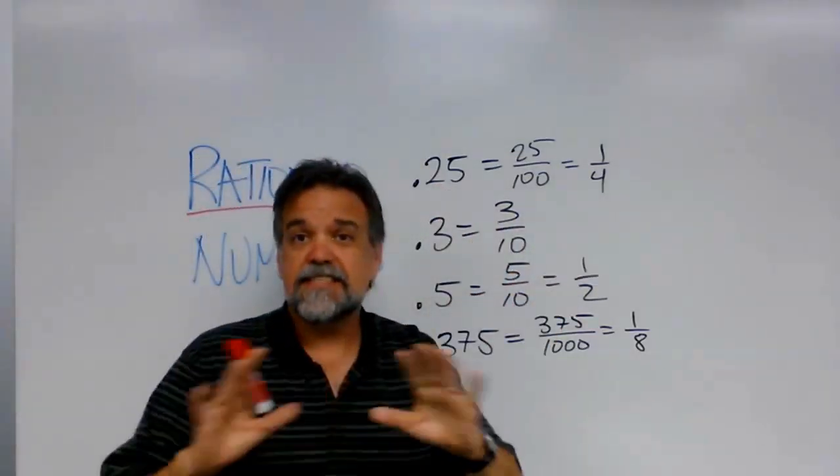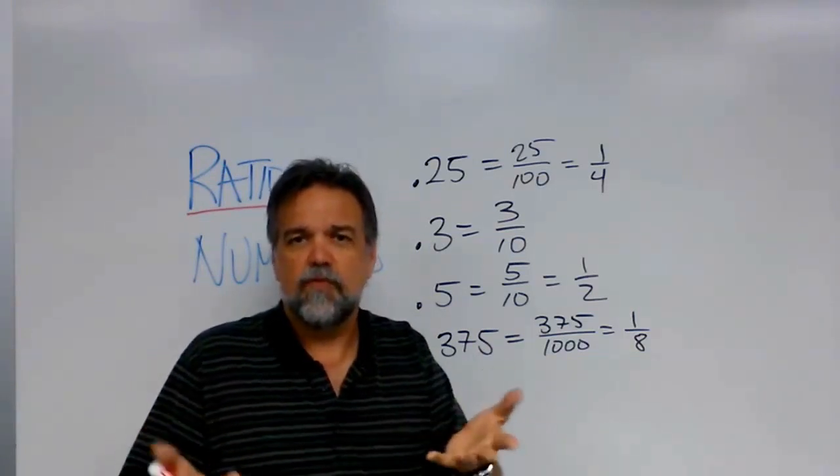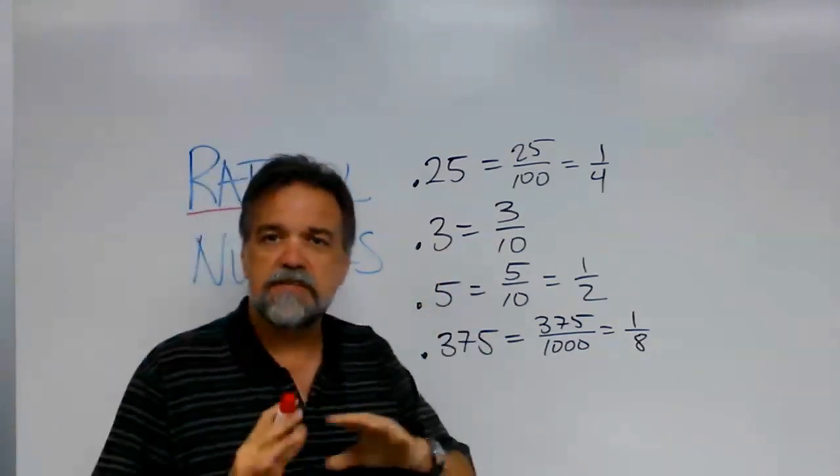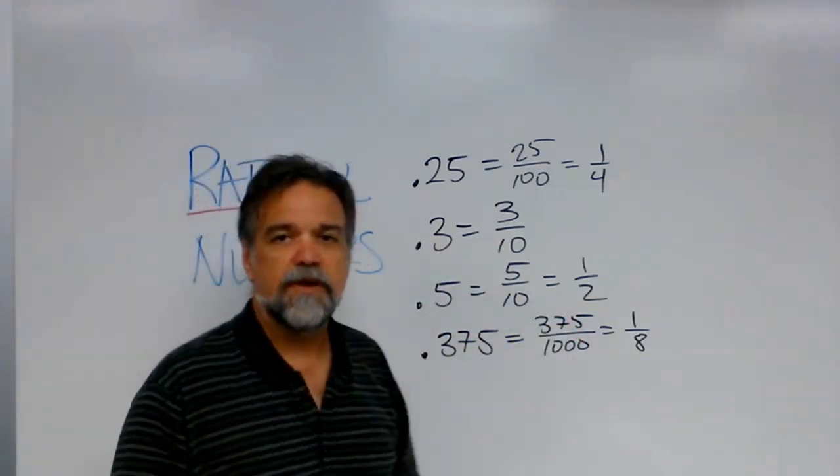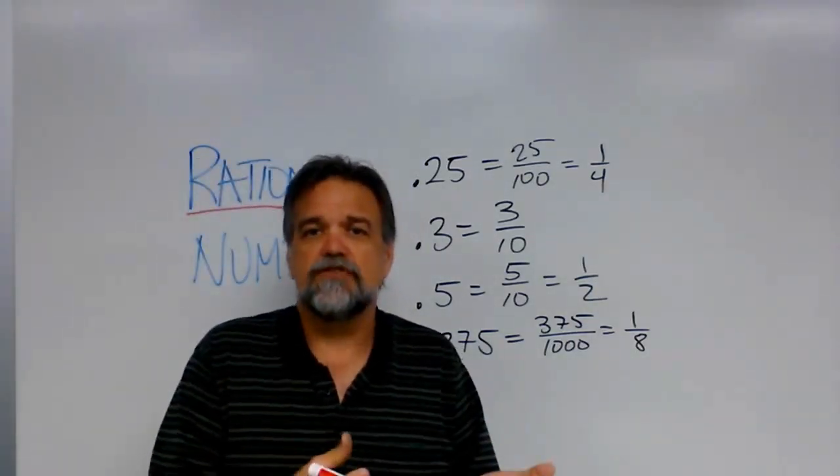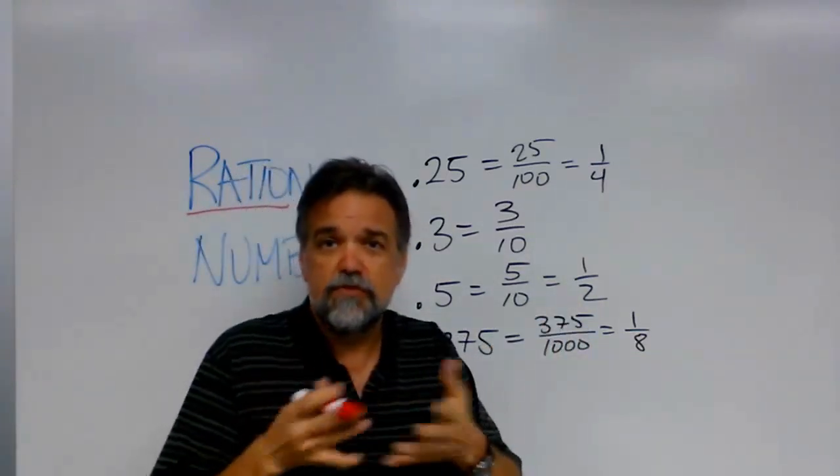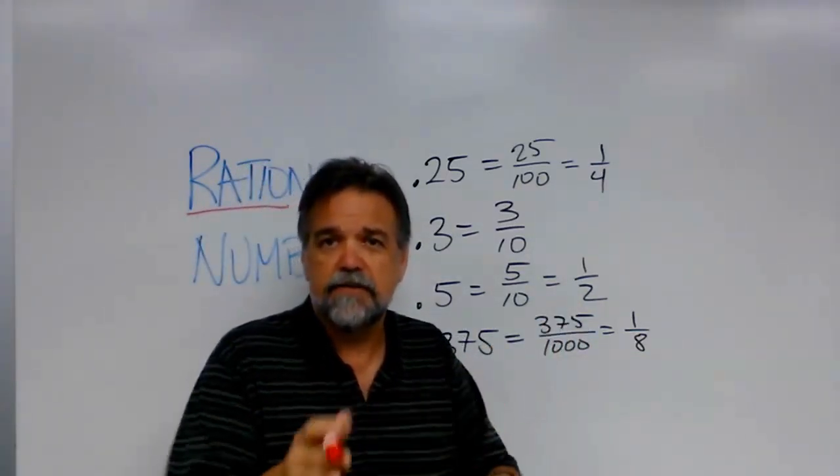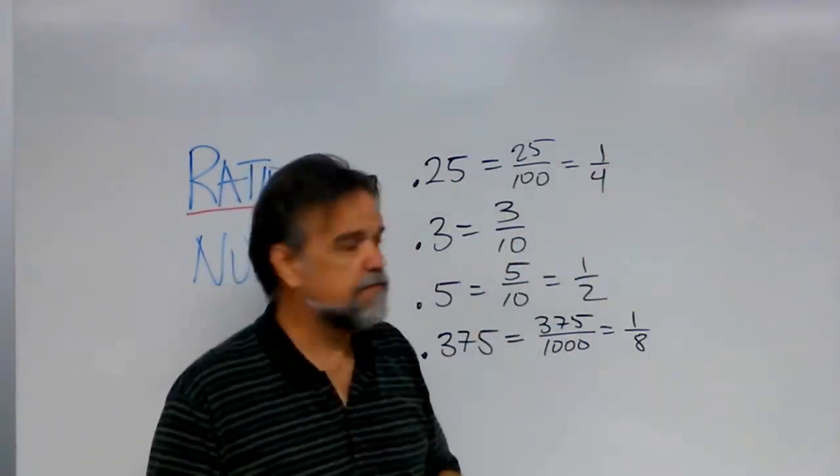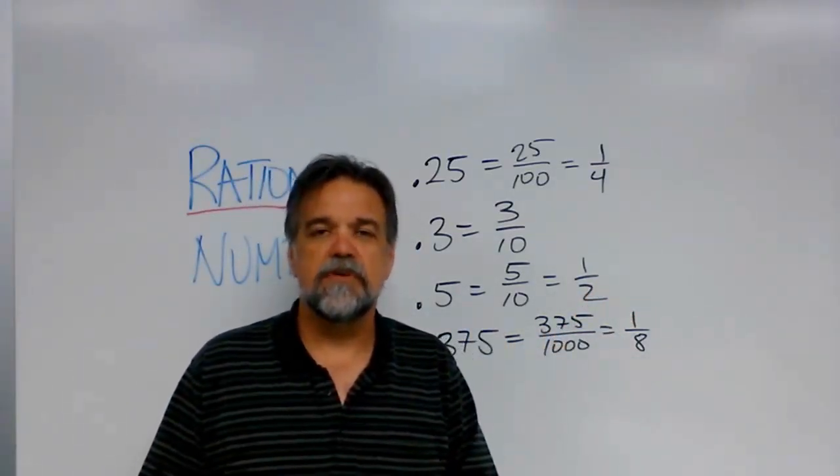Point-twenty-five and one-fourth, that's the same number. It's just got two different names, two different ways of writing it, but it's the same concept either way. Point-three and three-tenths, exactly the same number. Point-five and one-half, the same number. Now, if you have a rational number written as a fraction and you want to write it as a decimal, it's really easy. All you have to do is just do long division, or just grab a calculator and do the division, and you'll see one divided by four is point-twenty-five. One divided by two is point-five.